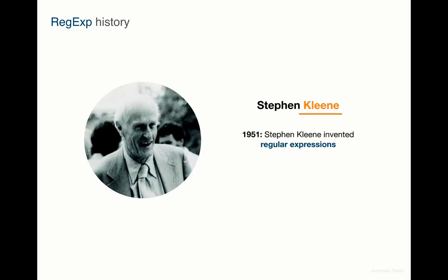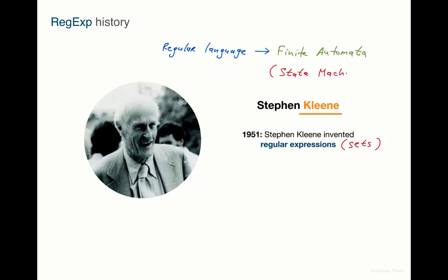Regular expressions originated in 1951 when mathematician Stephen Kleene described regular languages using his mathematical notation called regular sets. This arose in theoretical computer science, in the subfields of automata theory and the description and classification of formal languages. A regular language can be defined as a language recognized by finite automata. The terms finite automata and state machines are used interchangeably and will be covered in greater detail during this course.